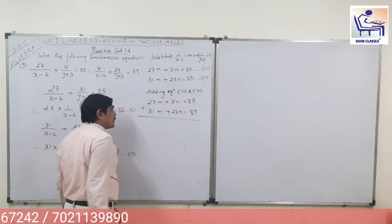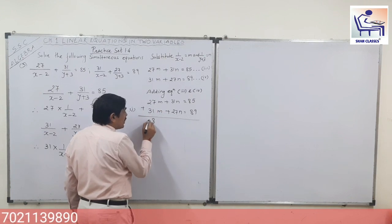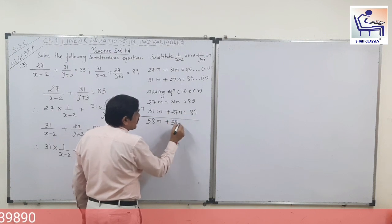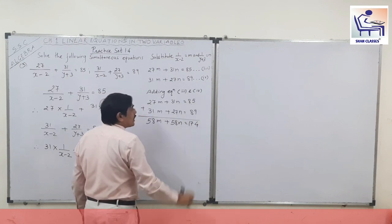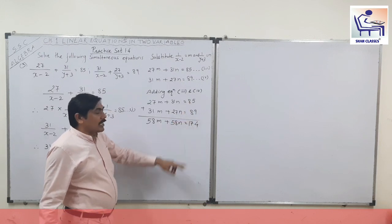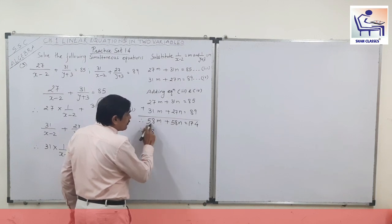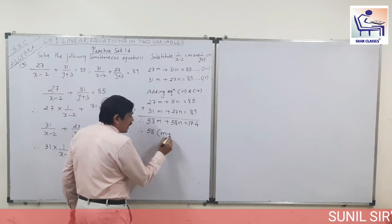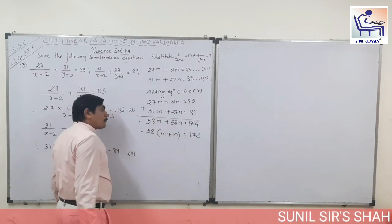When we are doing the addition, no need to change the sign, just add up. 27 plus 31 is 58M, and 31 plus 27 is 58N, and 85 plus 89 is 174. So 58 is common in both variables, so we take 58 as common: 58 into (M plus N) is equal to 174.